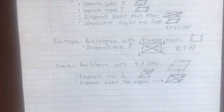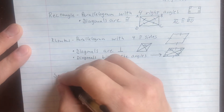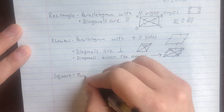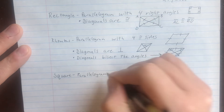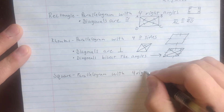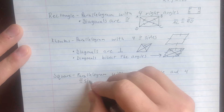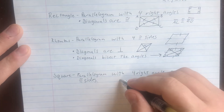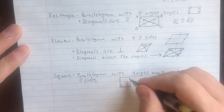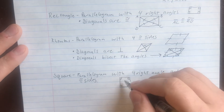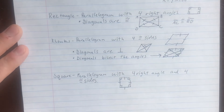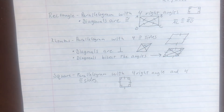The last special parallelogram is the most special quadrilateral — a square. A square is a parallelogram with four right angles and four congruent sides. Four right angles makes it a rectangle; four congruent sides also makes it a rhombus. Therefore, a square has all the characteristics of the rhombus, the rectangle, and the parallelogram.